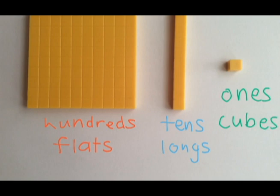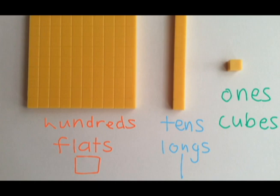Now as students begin to be more skillful in setting up the base 10 blocks to represent numbers, it actually becomes time consuming. So we also teach base 10 shorthand for these blocks. The hundreds are simply represented with a square, longs or tens are represented with a single line similar to a tally mark, and ones or cubes are represented with a dot — and sometimes students will draw an x.